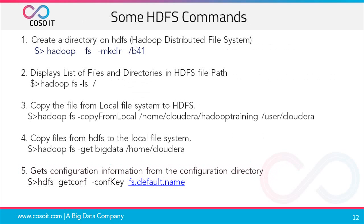Now let us look at some HDFS commands. All HDFS commands start with 'hadoop fs'. The 'hadoop fs -mkdir' command is used to create a directory on HDFS. To display the list of files and directories in an HDFS file path, use 'hadoop fs -ls' followed by the directory path. To copy a file from the local file system to HDFS, use 'hadoop fs -copyFromLocal' with the original path and the destination path.